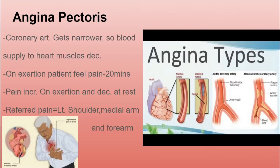Hello everyone, today we will discuss the various diseases related to the heart. First we have angina pectoris. In this, the coronary arteries get narrowed, so the blood supply to the heart muscle decreases and the heart is not able to pump enough blood to the various body parts. As you can see in the diagram, this is the normal artery and this is the angina pectoris artery.